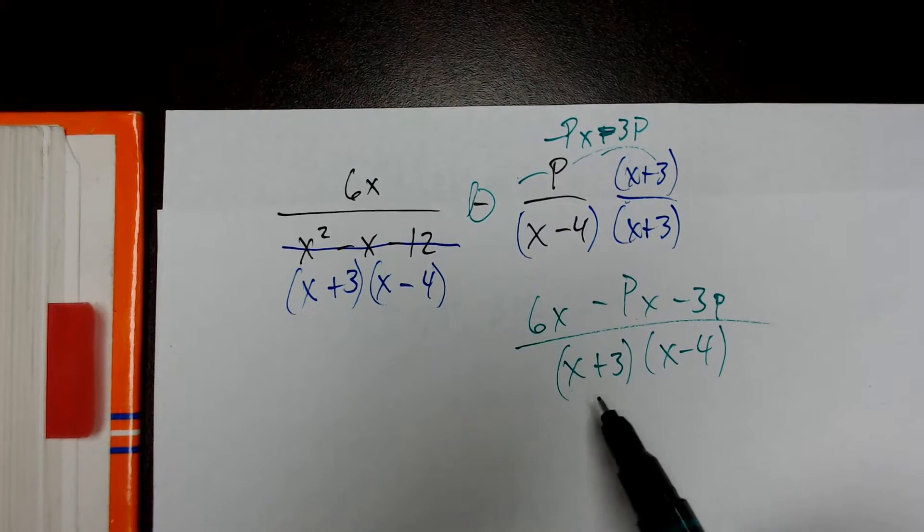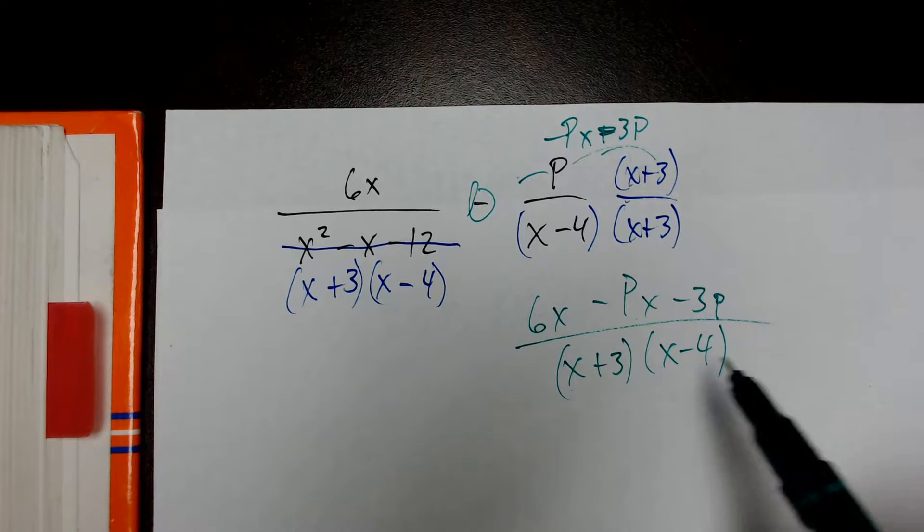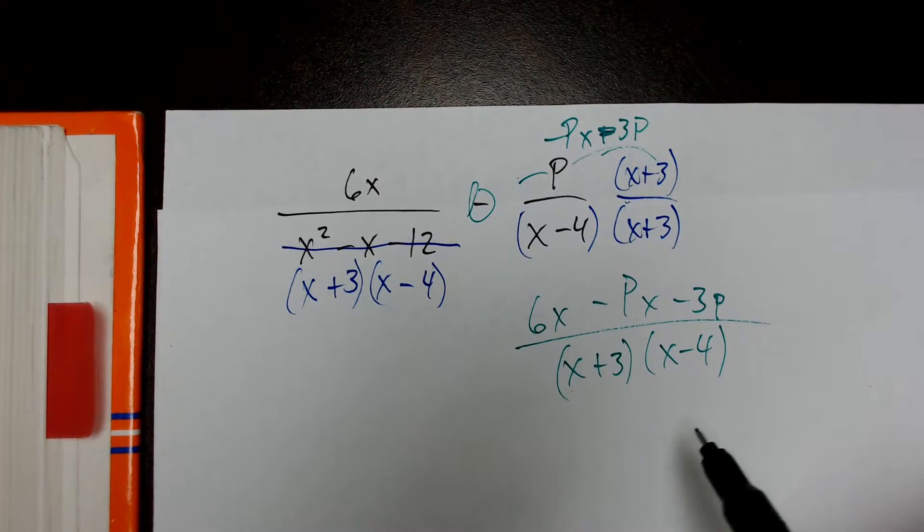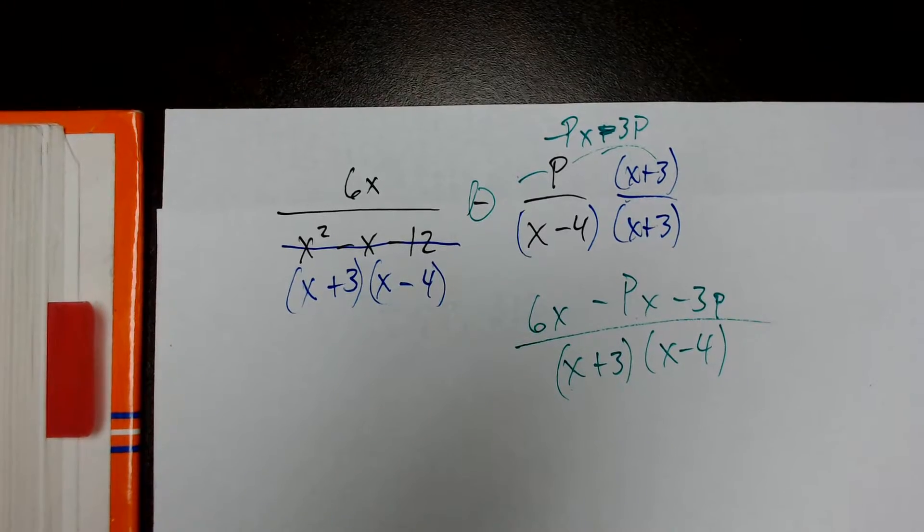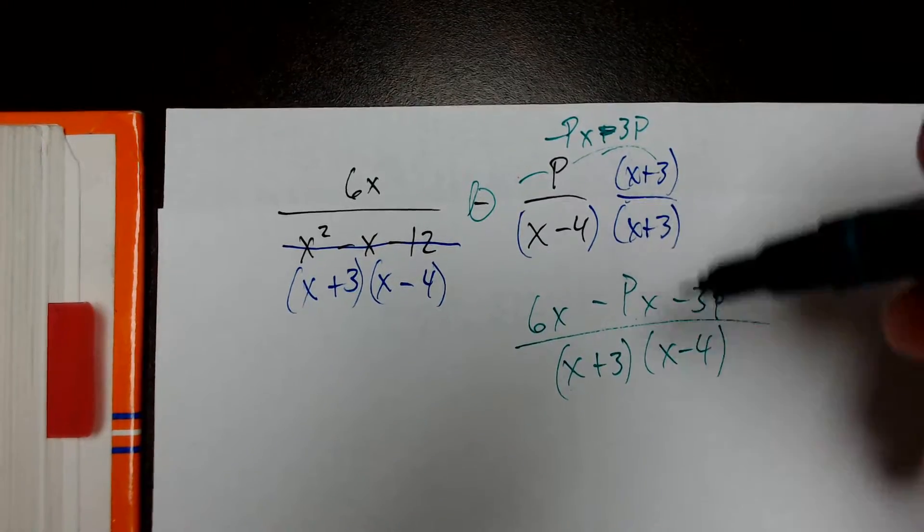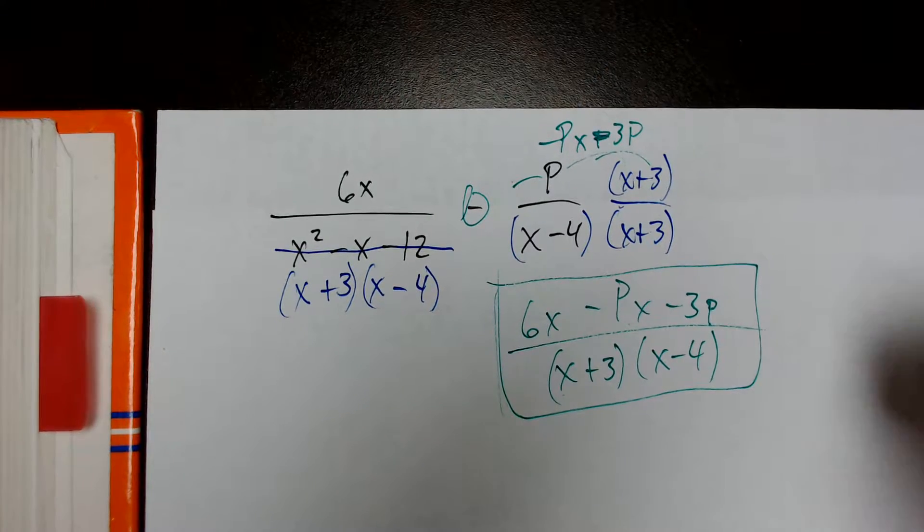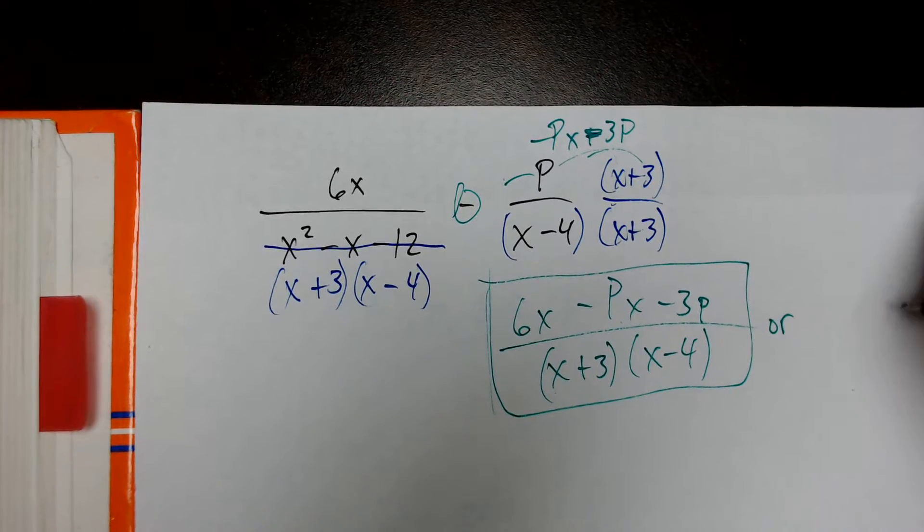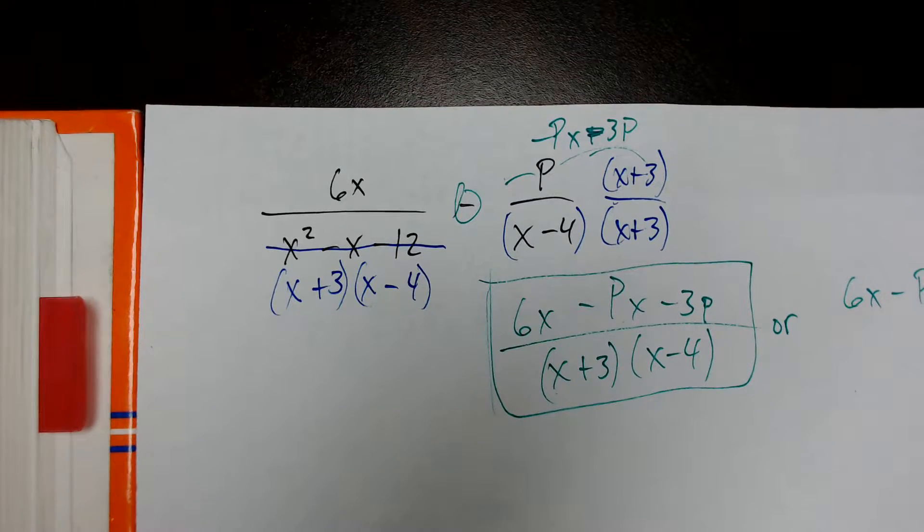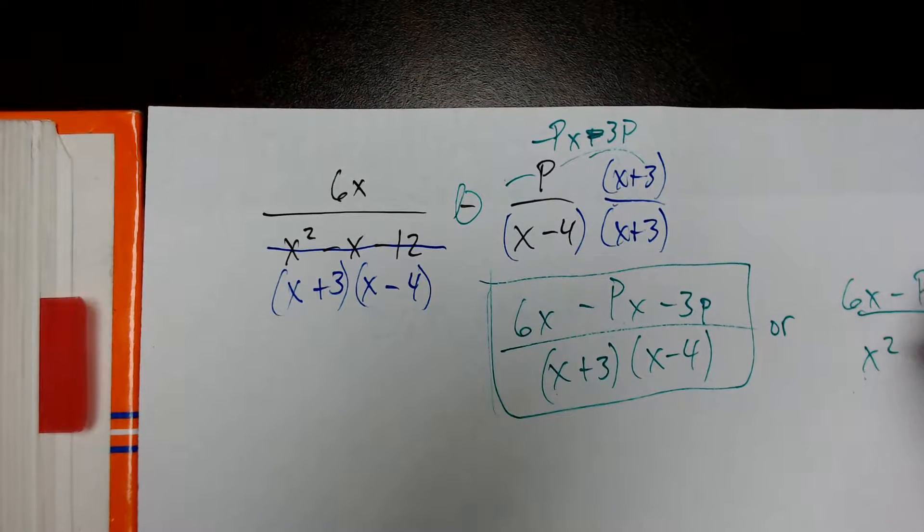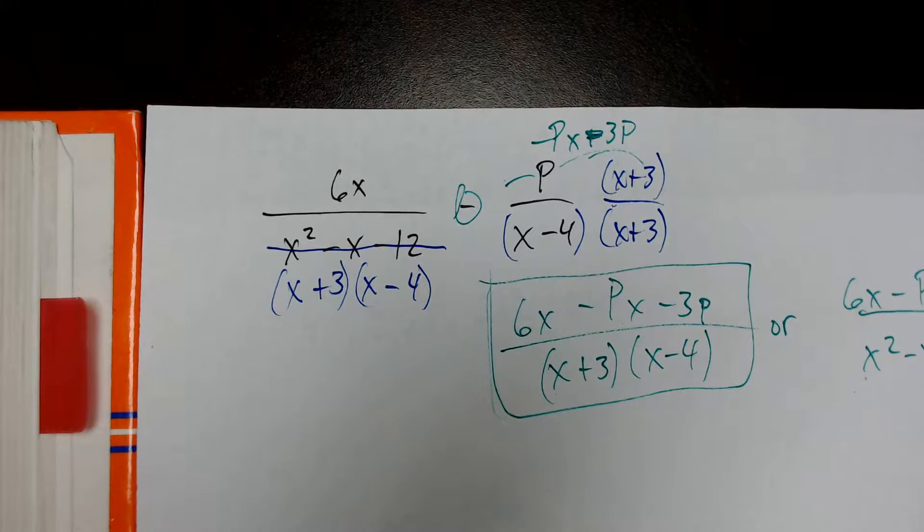Now, sometimes the book will tell you to go ahead and foil these again. I'm not going to make you do that. I think it's easier to read this way. So you can leave your denominators unfactored. If we're checking homework and I tell you it's wrong, just remind me. But this is a good final answer. If you want to foil the denominator, your final answer could also be 6x minus px minus 3p over x² minus x minus 12.